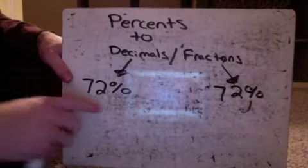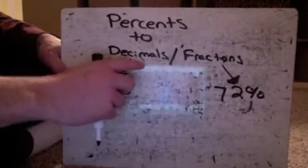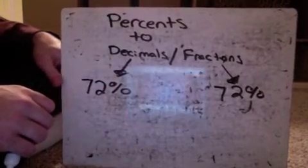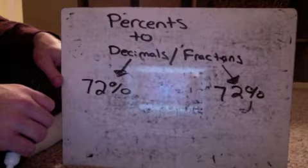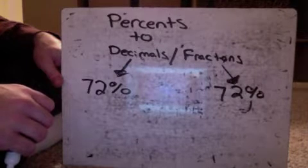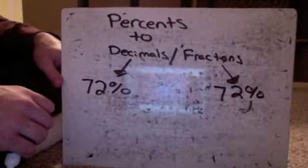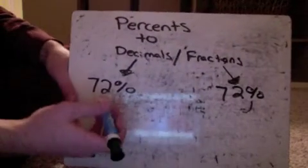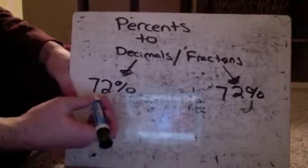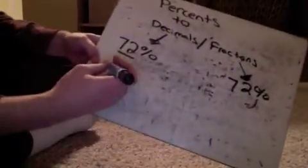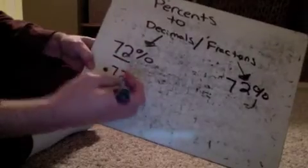To change a percent to, we'll start with a decimal, percent to a decimal. All you have to do is take the first two numbers, or the end two numbers of those percents, if it's just between 0 and 99. 72% will just take the first two numbers. 72% is the same thing as 0.72.